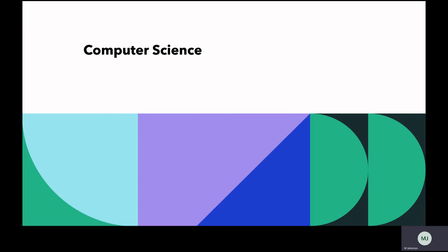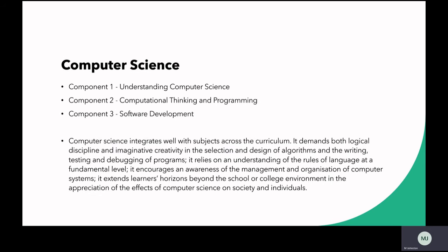Our second course is the GCSE in Computer Science. Similarly it has three components. The first unit is understanding computer science, the second is computational thinking and programming, and the third component is software development.